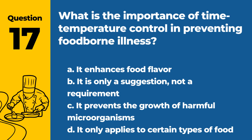Question 17. What is the importance of time temperature control in preventing foodborne illness? A. It enhances food flavor. B. It is only a suggestion, not a requirement. C. It prevents the growth of harmful microorganisms. D. It only applies to certain types of food. Answer: C. Time temperature control is crucial to prevent the growth and survival of harmful microorganisms in food.